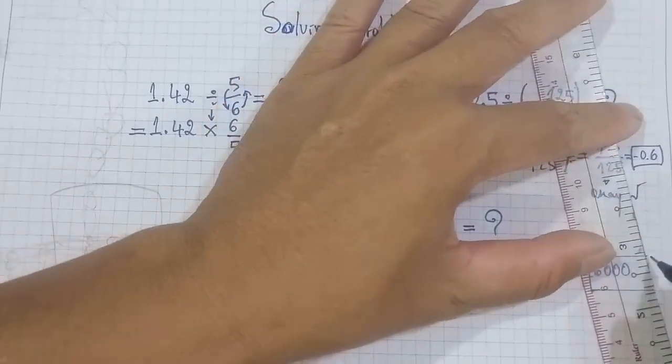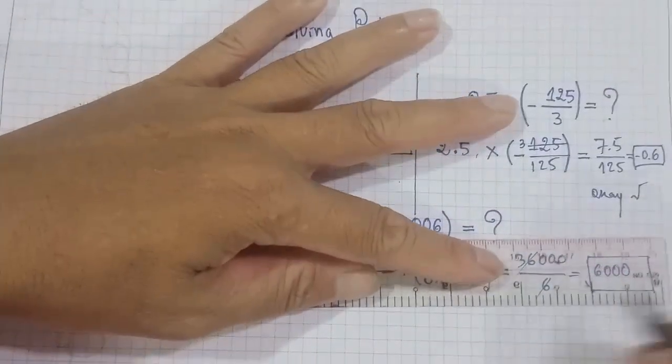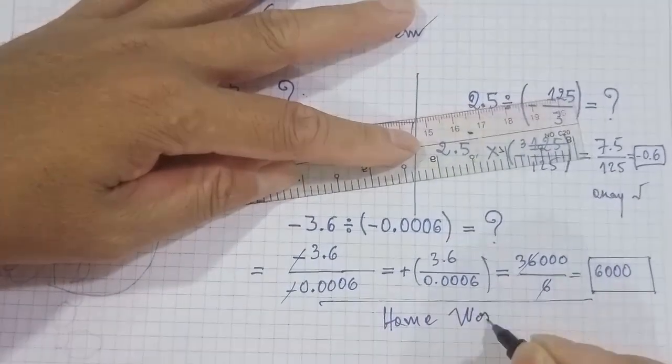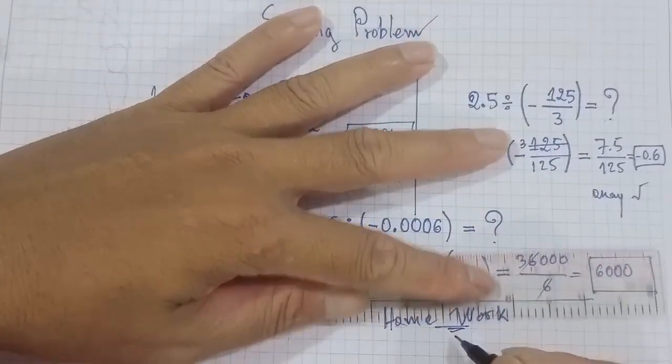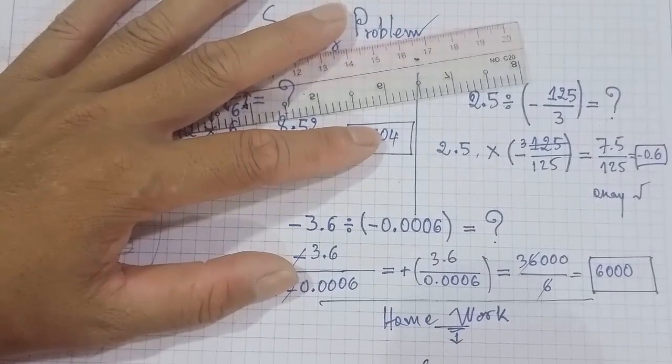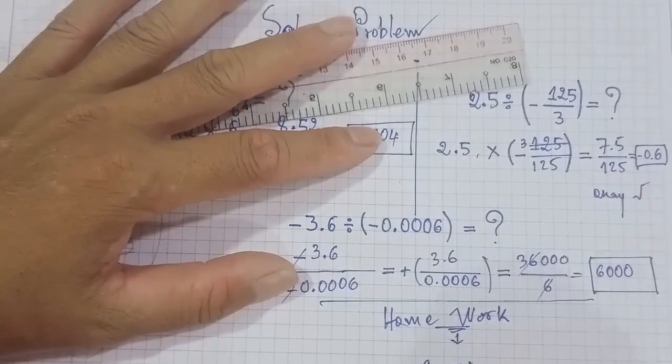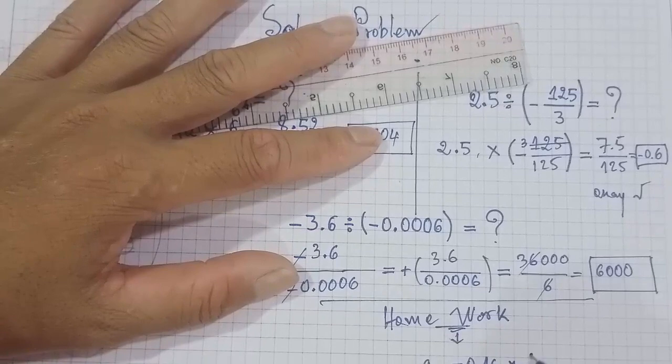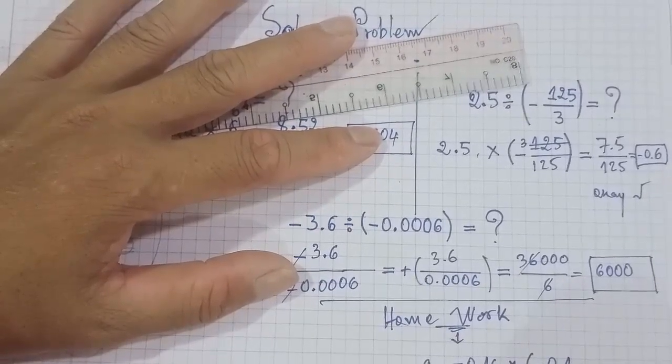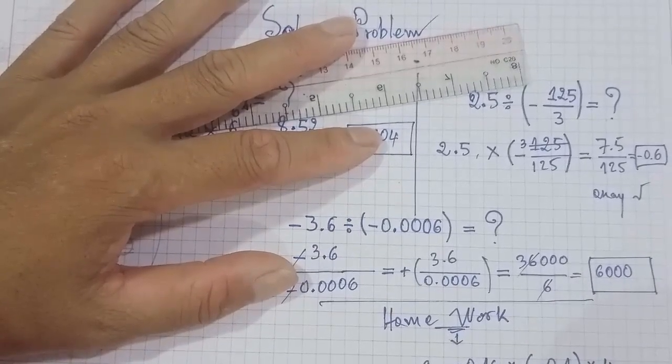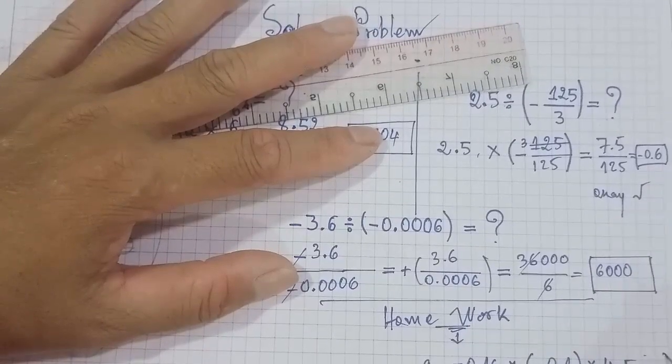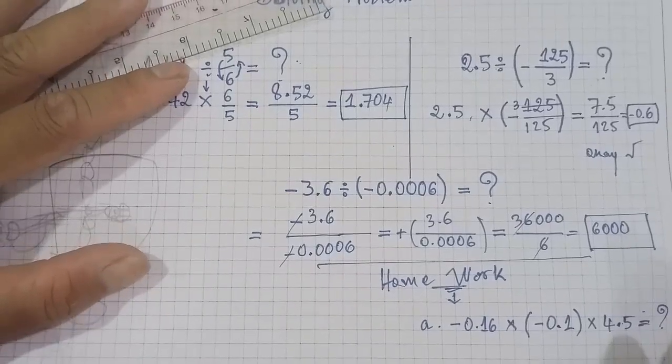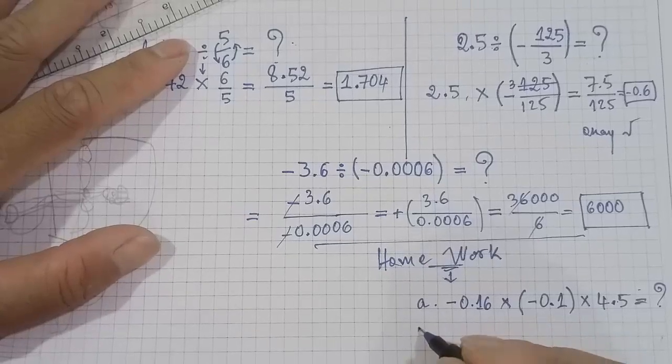I think that you can understand. So now I will write homework for you. You can pause and comment the answer below. Homework. Negative 0.16 multiply with negative 0.1 and multiply with 4.5, equals what. This is homework.